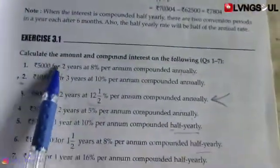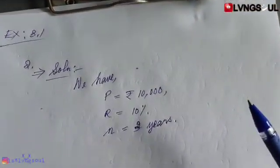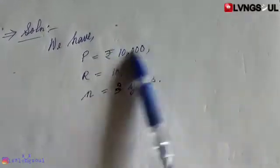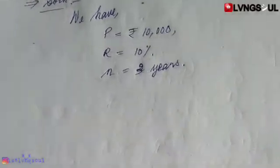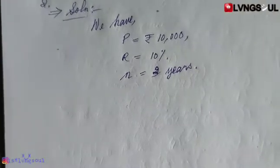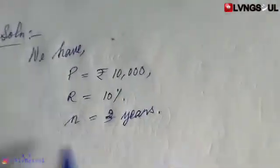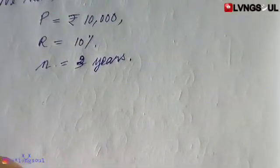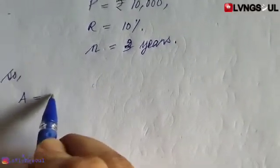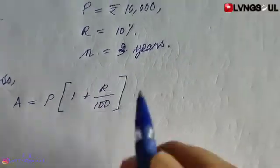Calculate the amount. So now we are going to take a look at the formula of the solution. Amount is equal to A, which is equal to P into 1 plus R by 100, raised to the power of time.